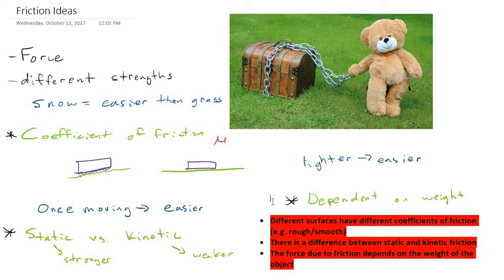So let's just quickly recap our three important points. First of all, different surfaces have different coefficients of friction. Rough surface has a higher coefficient of friction, makes it more difficult to move.